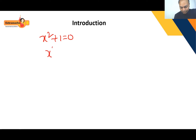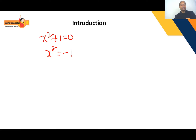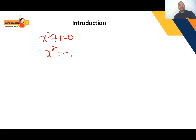From x² + 1 = 0, we get x² = -1. But in general, the square of any value is always greater than or equal to zero — it may be positive or zero, but never negative. Here the value is -1, a negative number. So there is no real number that satisfies this equation — no real solution exists.